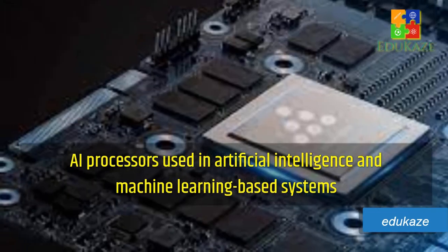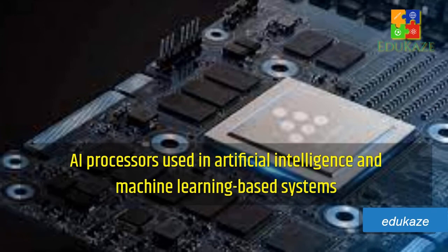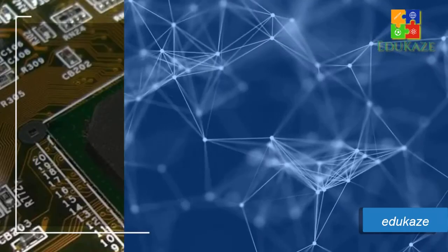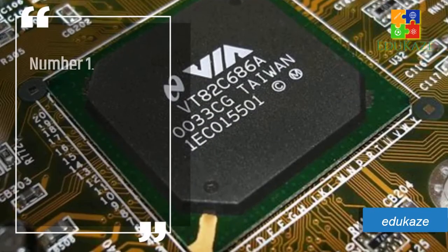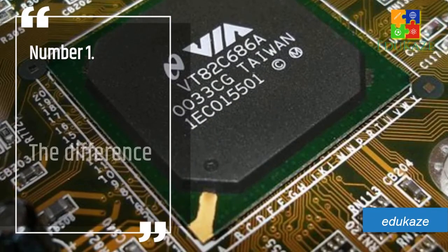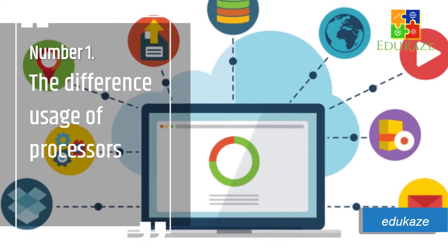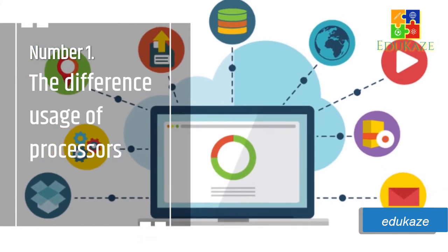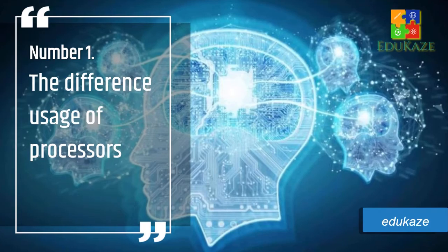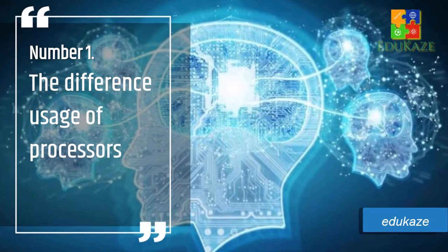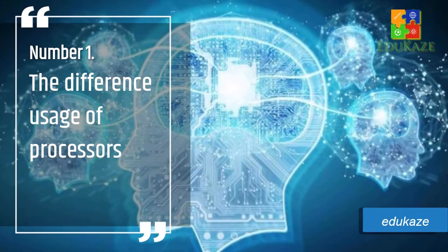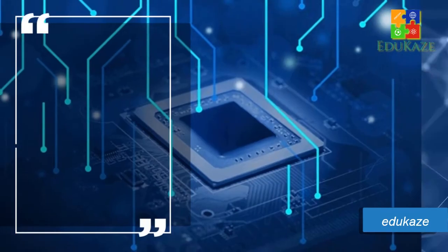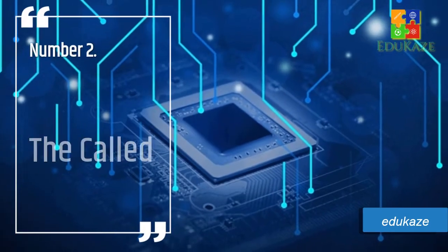Now let's look at the differences between both kinds of processors. Difference number one: the usage of the processor. Normal processors are usually used in personal computers and mobile systems. On the other hand, AI processors are used in artificial intelligence and machine learning-based systems.